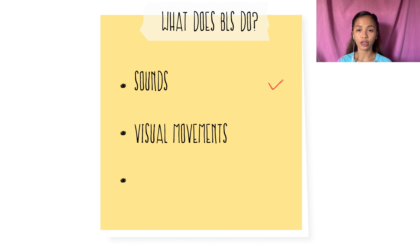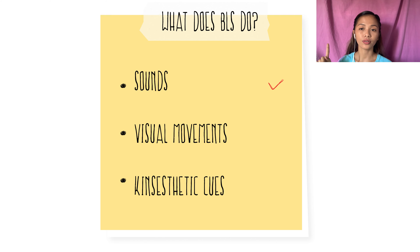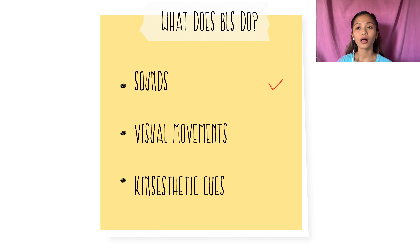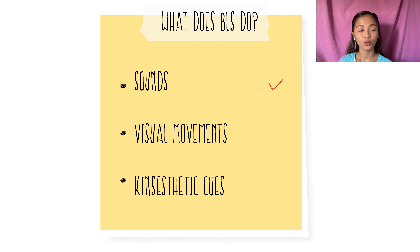What does bilateral stimulation do? Bilateral stimulation refers to first, sounds — this is usually tones from a headset. Second is visual movements, where we follow a moving object back and forth across the perceptual field. And third is kinesthetic use, or tapping, which requires tracking by the eyes, ears, or body.